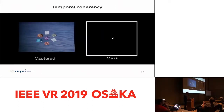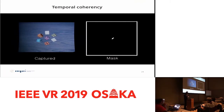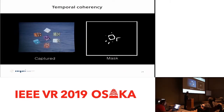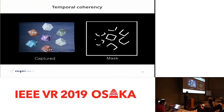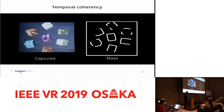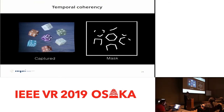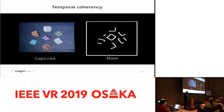In terms of temporal coherency, we checked results for an animated scene. This is a capture result from our display, where the red mark shows the gaze direction and on the right you can see the mask. As the cubes rotate and move forward and backward, there are no visible artifacts. The result looks temporally coherent and stable.